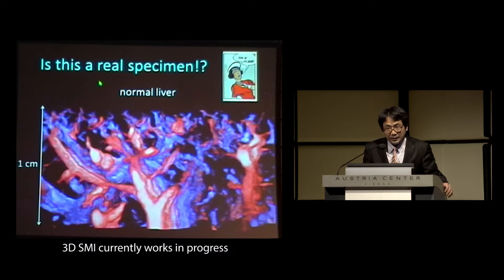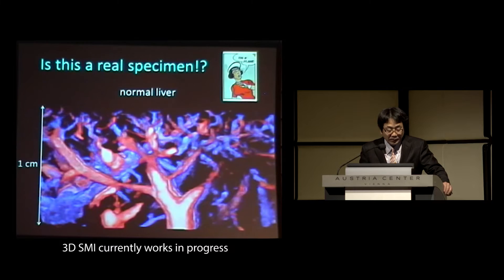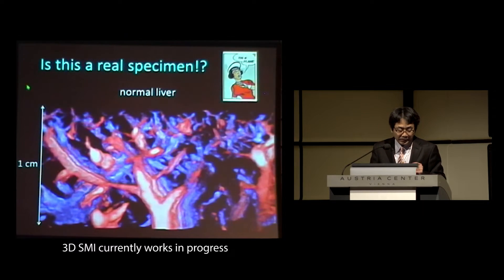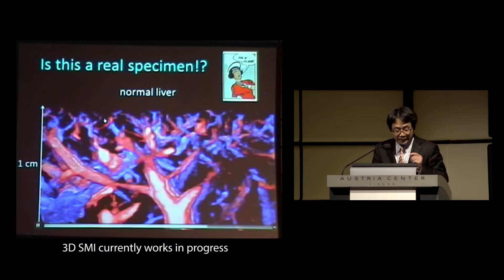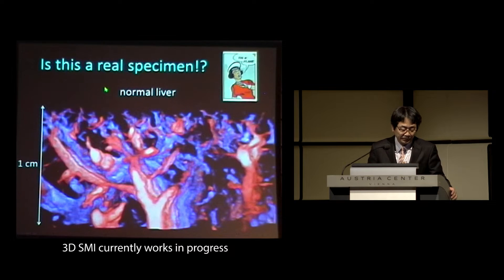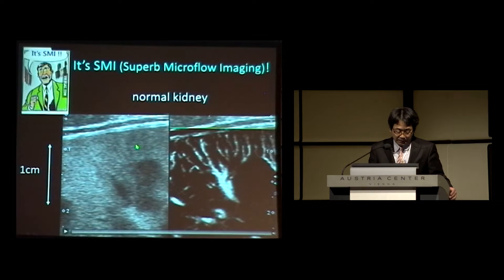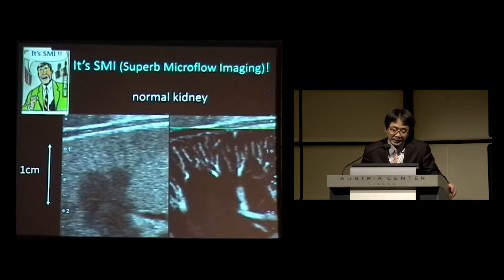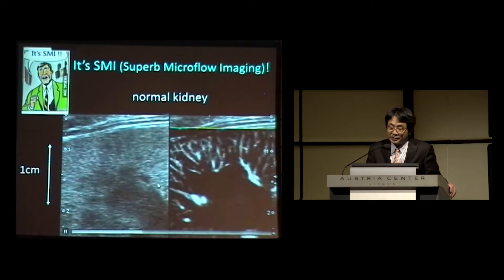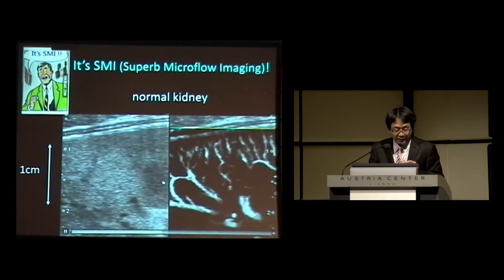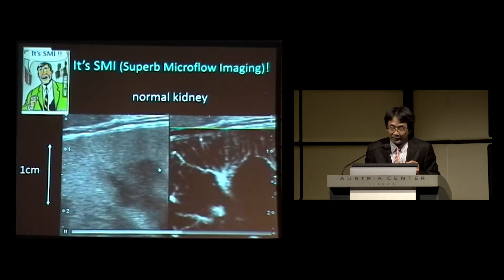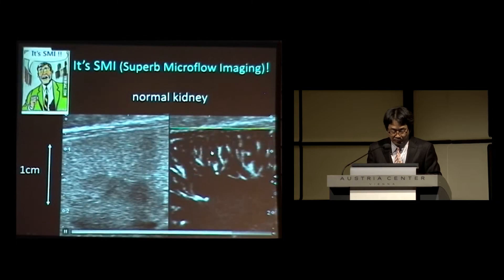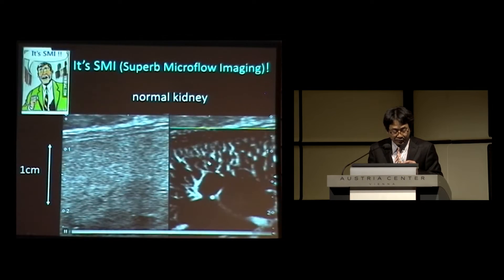Is this a mold taken from a real specimen? It looks like it, but it's not. It is still difficult to make molds of these very fine, tiny vessels. In fact, these 3D images were constructed from the 2D images of SMI. And in normal kidney cortex, you can see very fine, normal vascular structures.